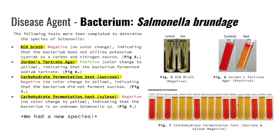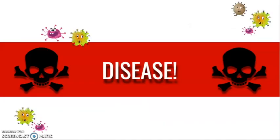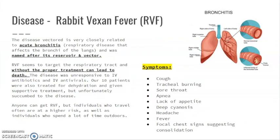Considering that the species was unknown, we concluded we had a new species, which we decided to name Salmonella brundage. The disease is rabbit vexin fever, named after its reservoir and vector. It is related to acute bronchitis, targets the respiratory tract, and can lead to death without proper treatment. Symptoms include cough, tracheal burning, sore throat, apnea, lack of appetite, deep cyanosis, headache, fever, and chest pain signs suggesting consolidation. Supportive treatment, IV antivirals, and IV antibacterials were all ineffective, and individuals who traveled or spent time outdoors were more prone to the disease.